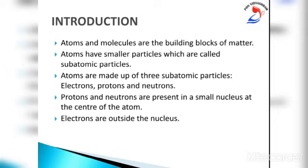As we know, atoms and molecules are the building blocks of matter. The existence of different kinds of matter around us is due to the different types of atoms and molecules present in them. Atoms are made up of three subatomic particles: electrons, protons and neutrons.